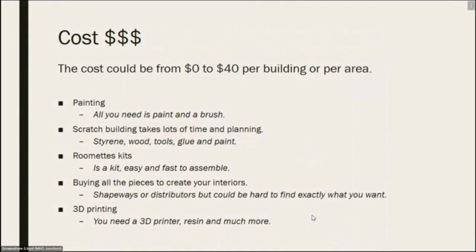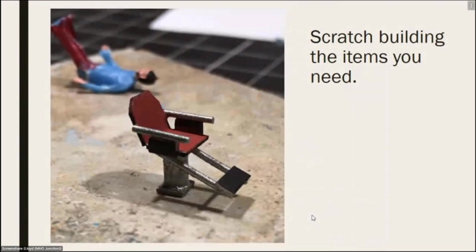Let's look at the costs. It varies between zero and forty dollars per building or per area. Painting — all you need is paint and a brush, so that's not too expensive. Scratch building takes a lot of time and planning — you need styrene or wood, tools, glue, paint. There's also a Roomette kit I'll talk about later, or you can buy all the pieces from Shapeways or other distributors, or use 3D printing.